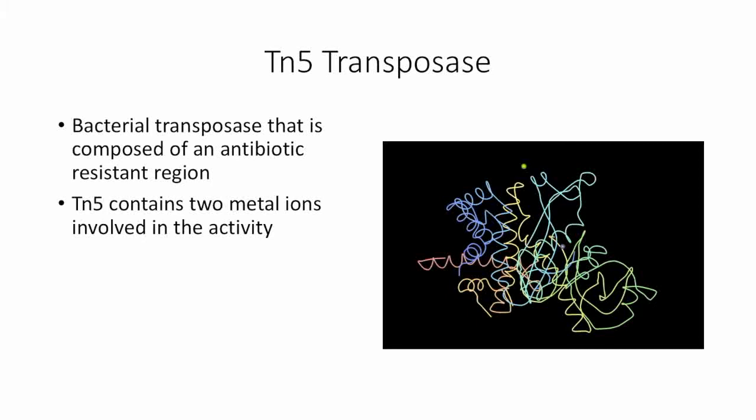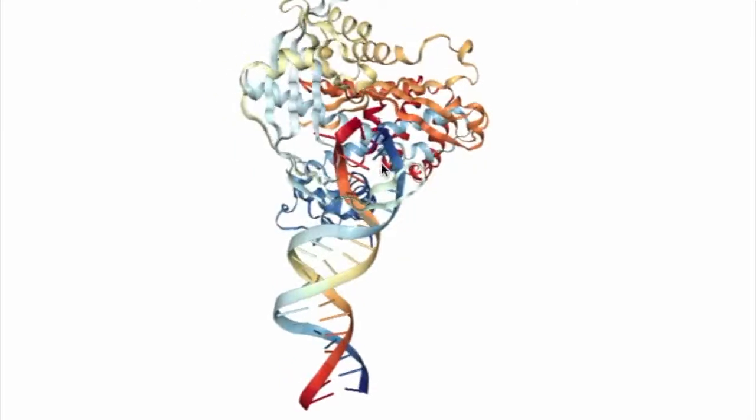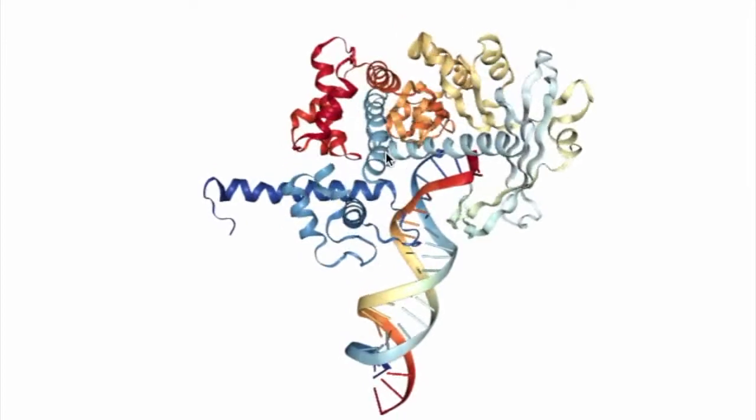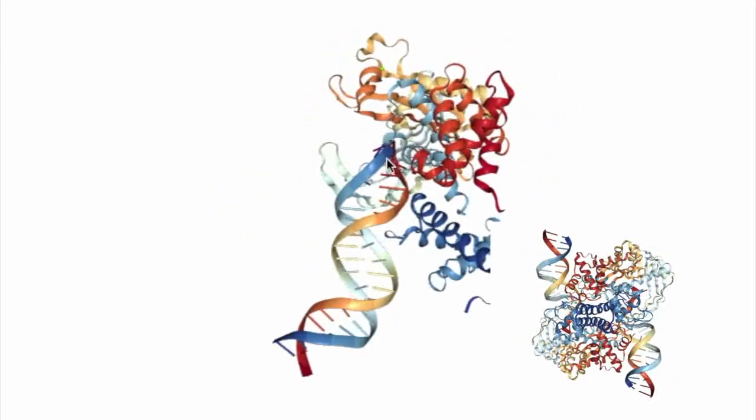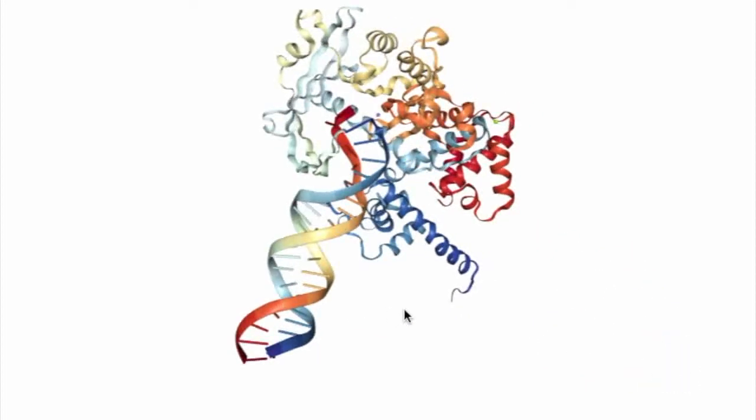The active site of TN5 contains two metal ions believed to be magnesium and manganese. Shown is one unit of the TN5 transposase with DNA interaction. Transposases are typically found in a larger protein complex called a transpososome, shown in the bottom right-hand corner. The transpososome plays a role in the architectural structure of the transposase and DNA to regulate interaction.